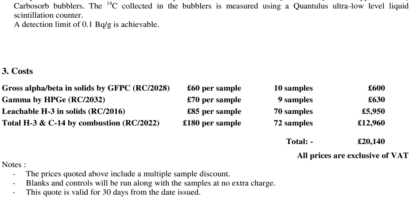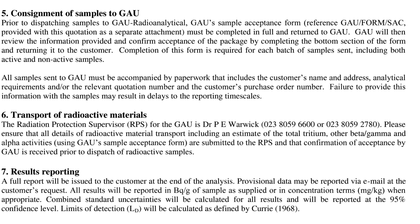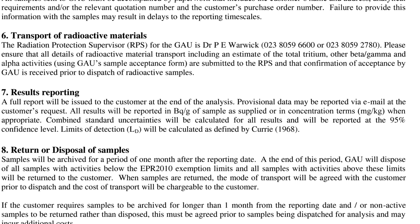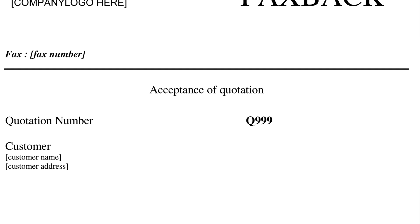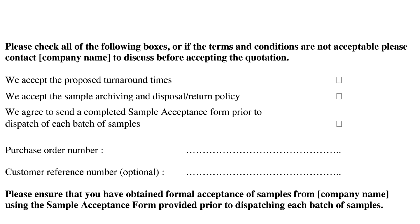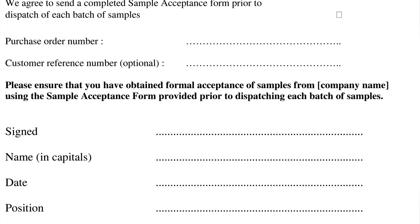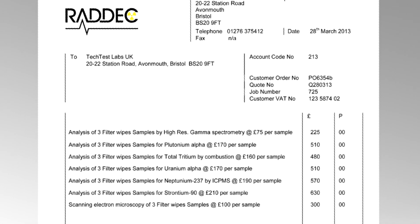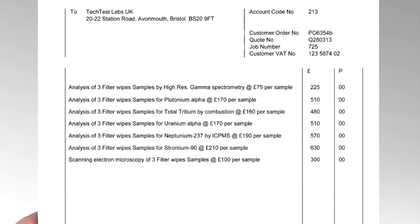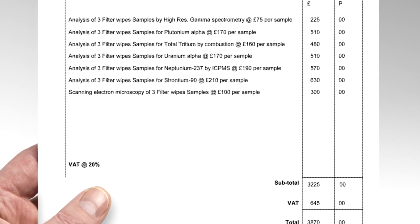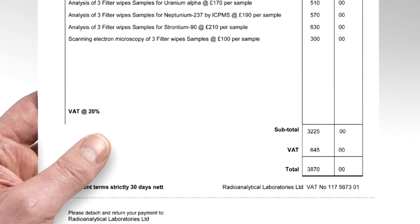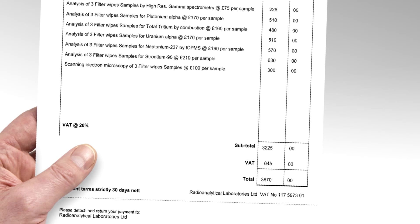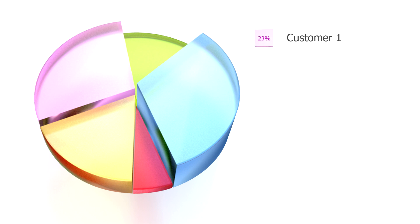The format of the quotation is specified via a user-defined quotation template. The quote generated may be linked to the job specification when samples are received. Invoices are generated in a similar manner based on the job specification and on a user-defined template. Financial information is stored in the system and can be used in financial analysis.